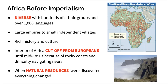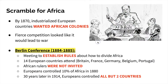As technology starts to get better because of the Industrial Revolution and the discovery of natural resources within Africa becomes apparent to Europeans, everything changes and there is a mad dash to colonize this continent. This race becomes known as the scramble for Africa.